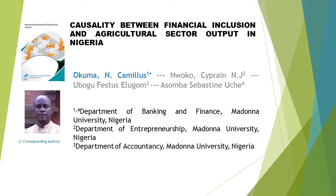Causality between Financial Inclusion and Agricultural Sector Output in Nigeria. This article is written by four authors: First author Okumer Incomus, second author Neko Cyprian NJ, third author Ubogafestis Elugam, and last author Asimba Sebastian Uch.